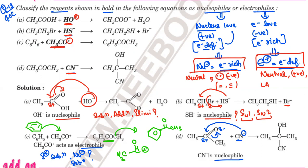So that was question number 13. I hope that if you had any confusion about nucleophiles or electrophiles, this question has cleared it up. We identified two nucleophiles in the set, and one species — CH₃CO⁺ — was the electrophile. I hope this is clear. If there is still any doubt or confusion, please let me know.